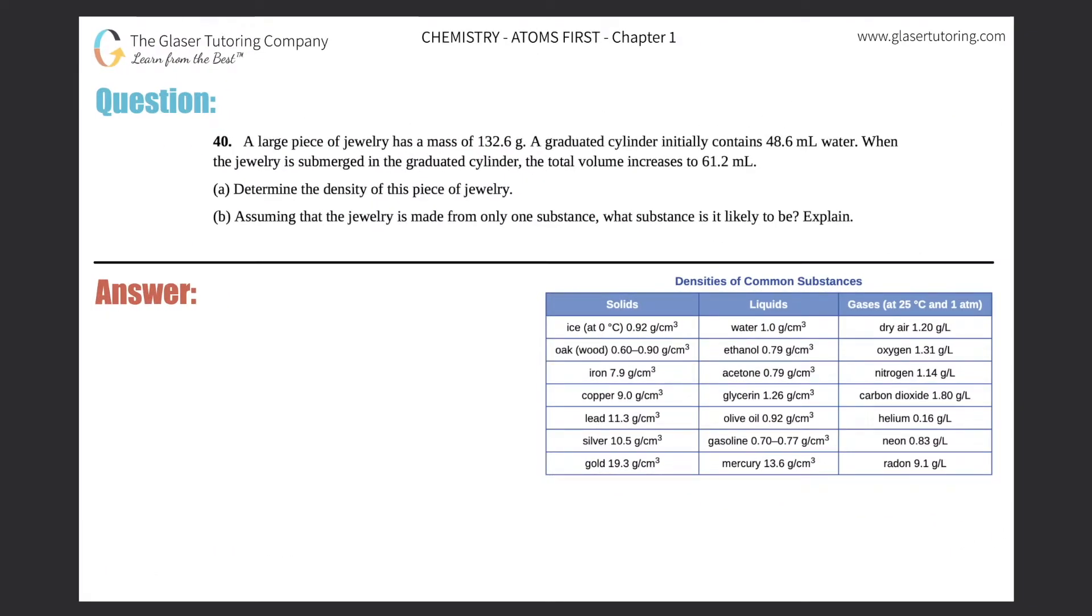Number 40: A large piece of jewelry has a mass of 132.6 grams. A graduated cylinder initially contains 48.6 milliliters of water. When the jewelry is submerged in the graduated cylinder, the total volume increases to 61.2 milliliters. Part (a): Determine the density of this piece of jewelry.